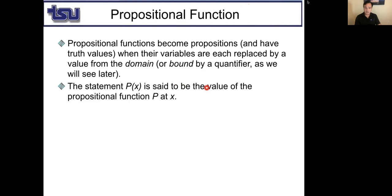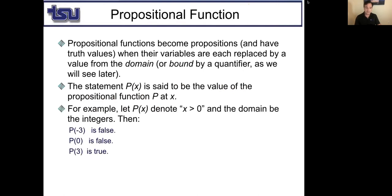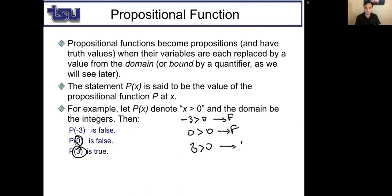The statement P(x) is the value of the propositional function P at x. For example, if P(x) means 'x is greater than zero' and the domain is integers, then P(-3) is 'negative three is greater than zero,' which is false. P(0) is 'zero is greater than zero,' which is false. P(3) is 'three is greater than zero,' which is true. Propositional functions become propositions when x is replaced by a value from the domain.